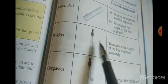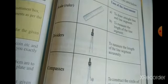So this is the divider, to measure the length of the line segment accurately. For accurate purpose, we are using dividers.